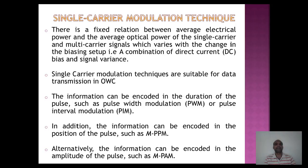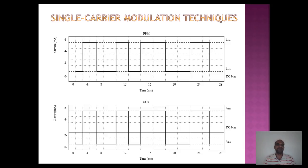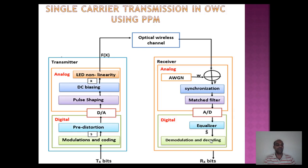In PPM, the bias is set between minimum and maximum values. In on-off keying, when it is on the data is transmitted, and when it is off the data is not transmitted. Instead of sending positive as well as negative signals, the bias is set to the maximum allowed position so that the maximum values can be transmitted. This is the single carrier modulation technique in optical wireless communication using PPM.